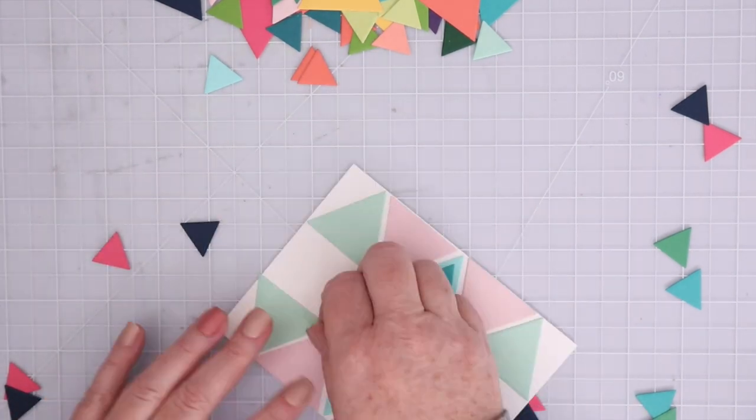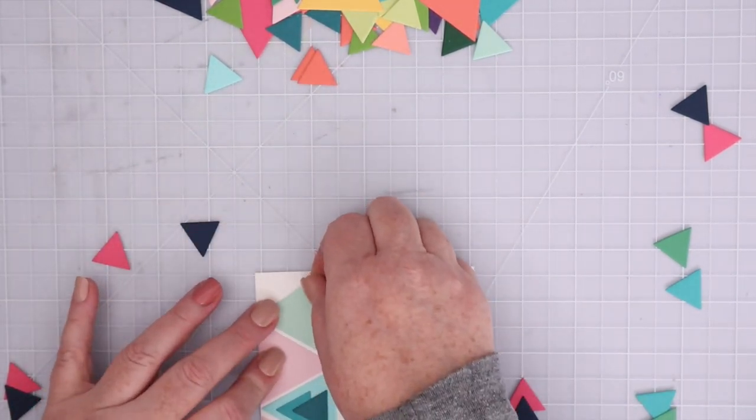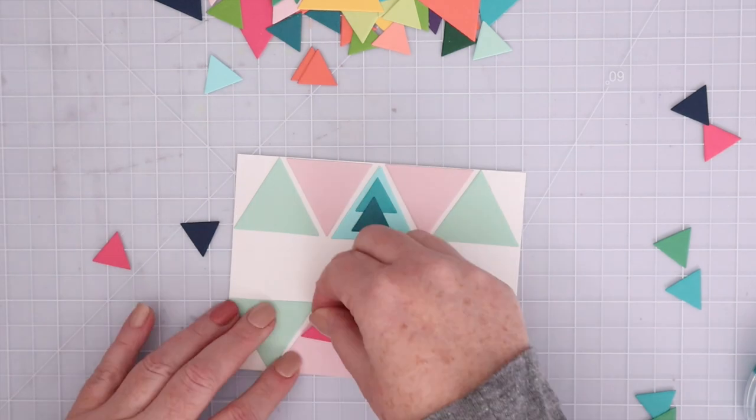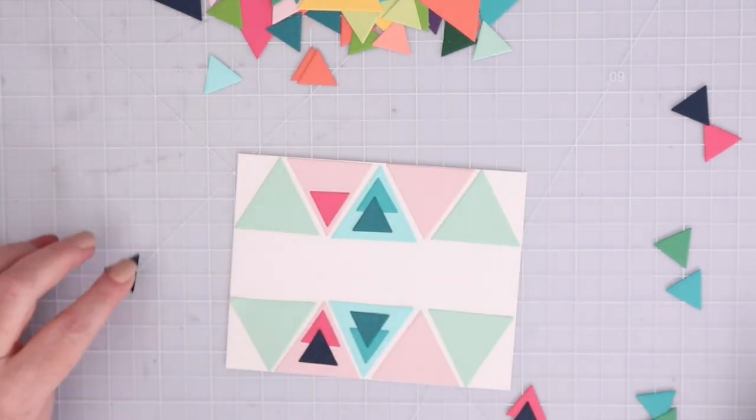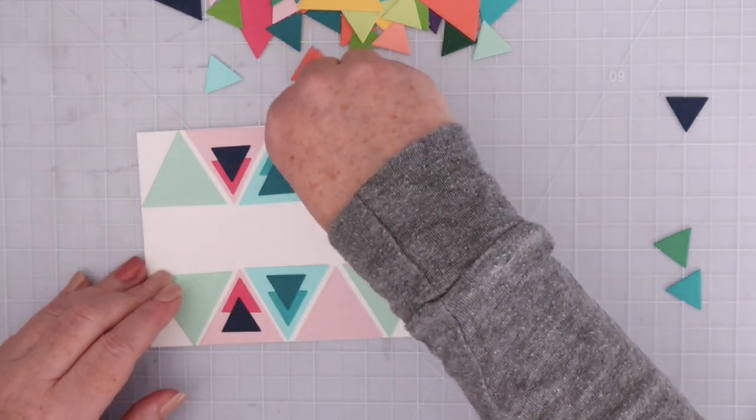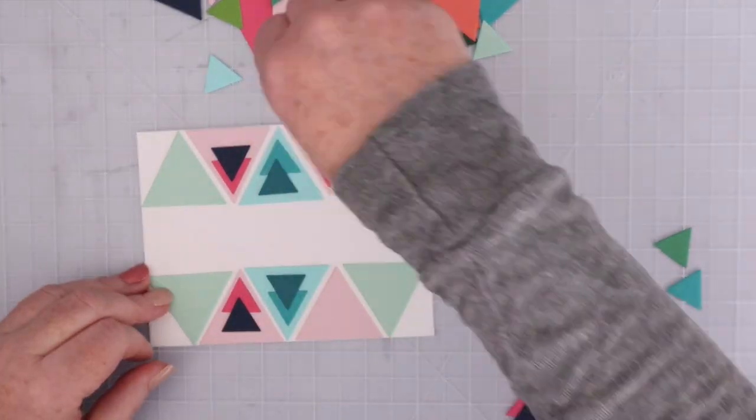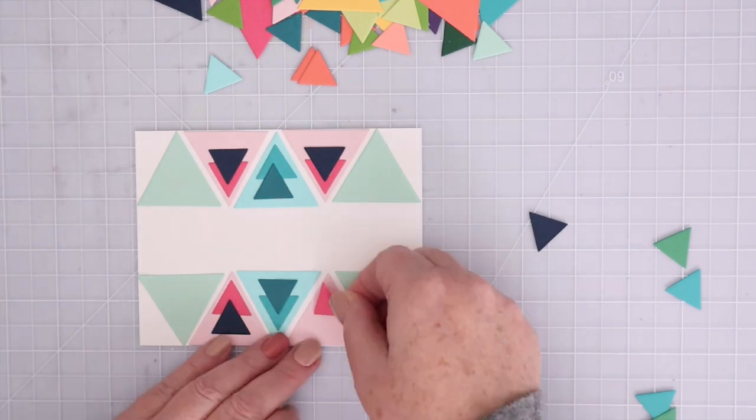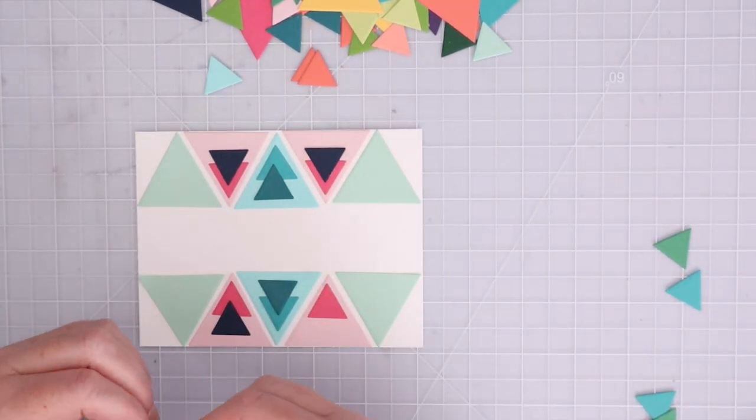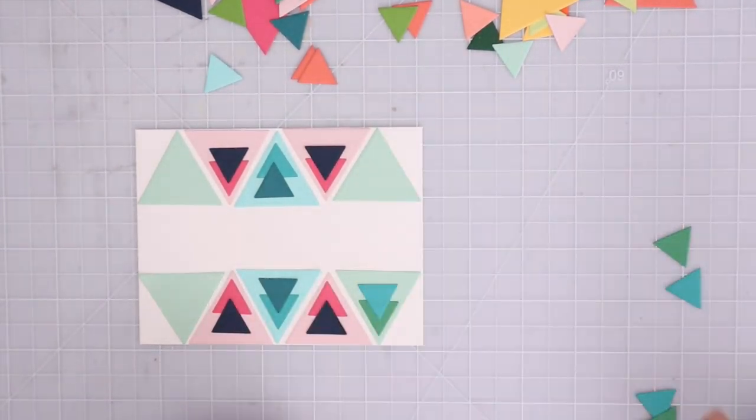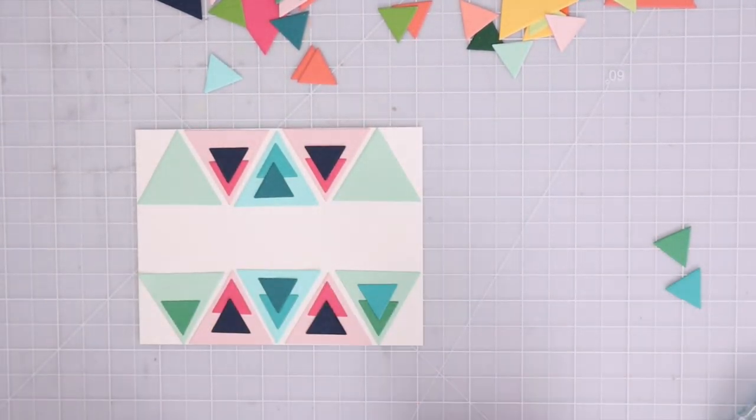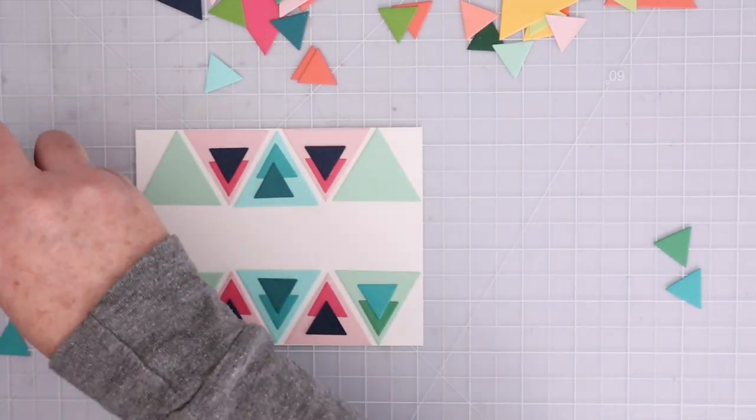I decided to create a design at the top and bottom of a horizontal A2 card and leave the center open for my sentiment. There are so many different patterns you could create with these triangles, from creating multicolor squares out of them or creating pinwheel image shapes. Half the fun is making something new from these geometric die cuts.